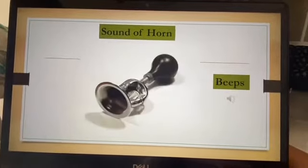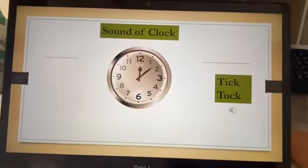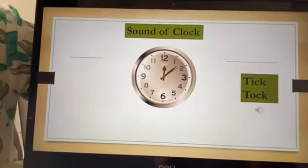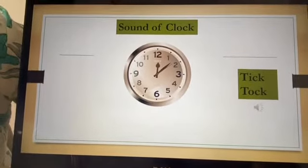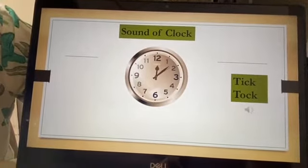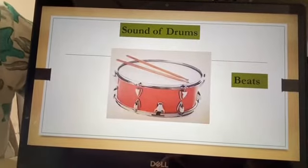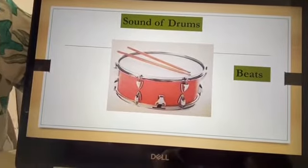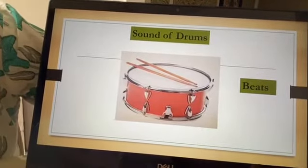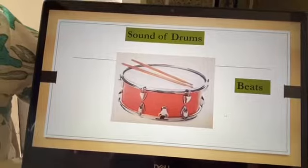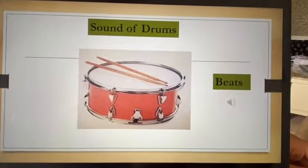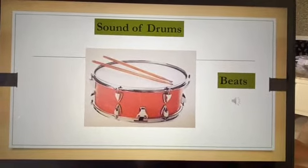The sound of a clock is called tick-tock. What is it called? Tick-tock. Then sound of drums — drums beats. What does it do? It beats. Vo sound ko bolte hain beats. So this is the sound of the drum beating — it beats.